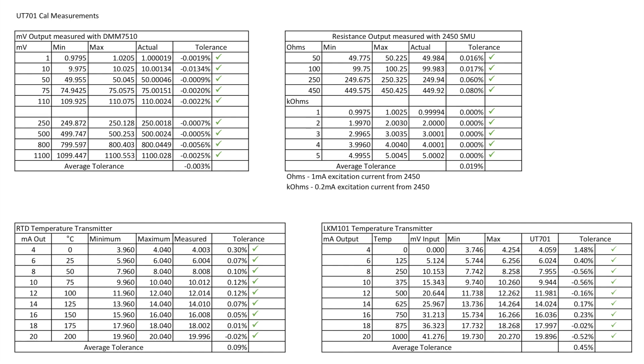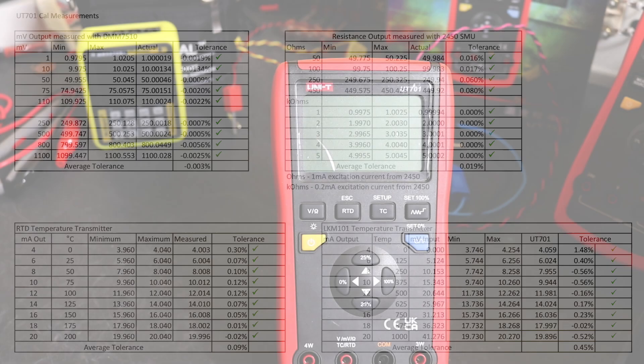Going down into the bottom there, there's my two temperature transmitters test results there. And again, everything is within tolerance. Our RTD is very good, 0.09 percent. That's way better than I would have expected really, especially with that type of transmitter. And the LKM 101, that's the thermocouple transmitter there. And again, everything is pretty good there. It's just that reading at the four milliamp level with zero degrees going in, 1.48 percent. That's the worst value across all the tables there really, but it's still within tolerance specified by the manufacturer. So all seems good at this moment in time.